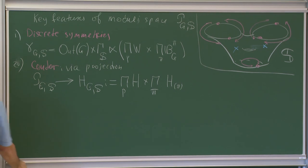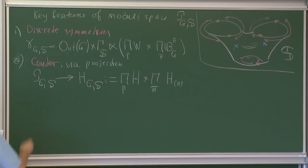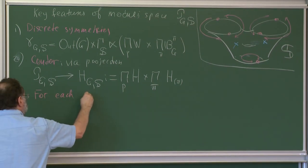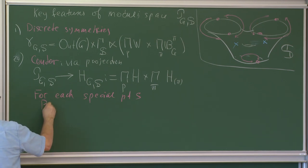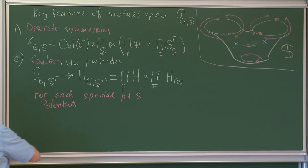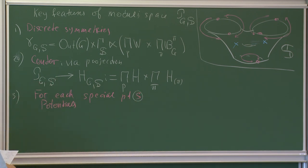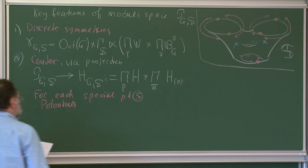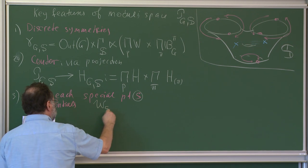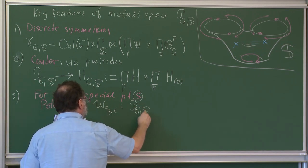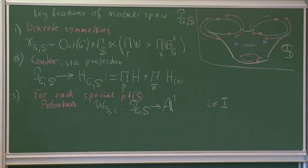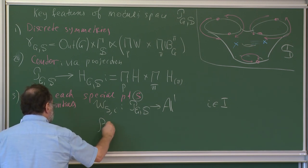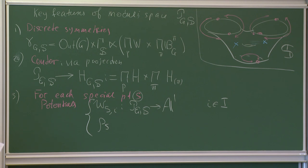The last piece of data, and the one I'm going to talk about right now, is that for each special point we have potentials. The potentials are functions W_S,I, which are regular functions on the space to A1, where I belongs to the set of positive simple roots — the set of vertices of the Dynkin diagram. And there is also a map rho. This is the data at the special point: potentials and projections to Cartan.